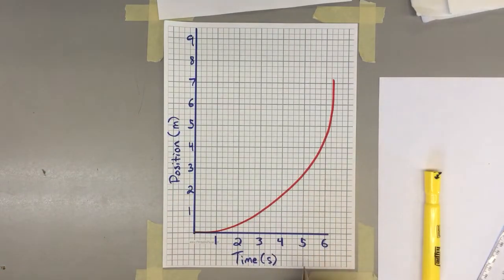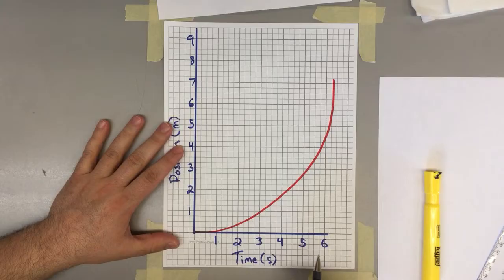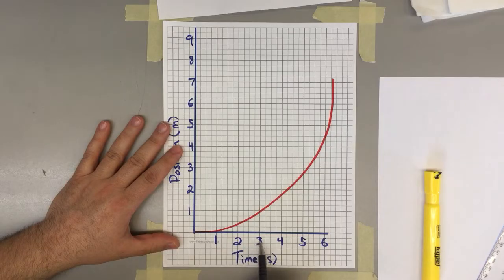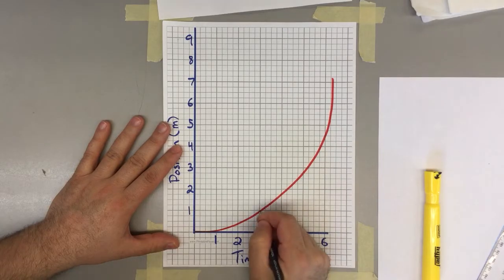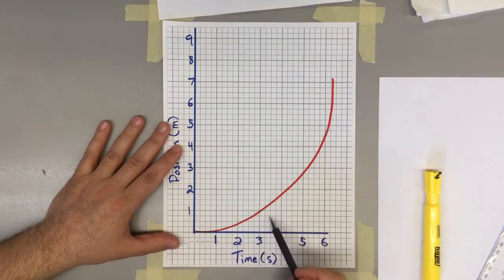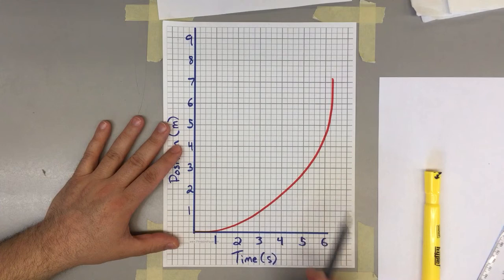Let's say we wanted to find our instantaneous speed at three seconds. So what we have to do is find three seconds on our graph, bring that up to the curve, make sure we mark that spot. So we are going to try to find out what our speed is at three seconds.